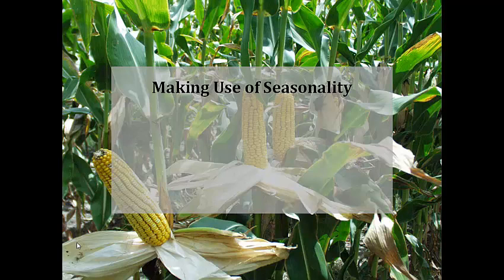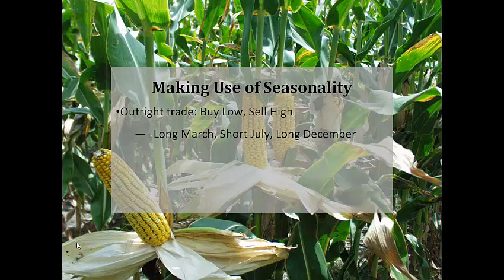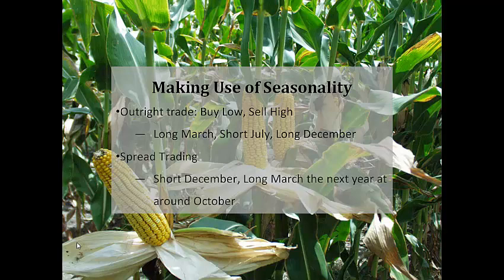How can we make use of these seasonal patterns? Two ways. The first way is very intuitive — buy low, sell high. Buy in February and sell in March. Buy in October and sell in December. Sell in June and buy in July. The second way is a little more tricky: it is by spread trading of the different month contracts. Spread trading is the simultaneous buying of a particular security and selling of a related security against it, to profit from the widening or narrowing of the net difference between the prices of the two securities. One possible spread is short December, long March next year.